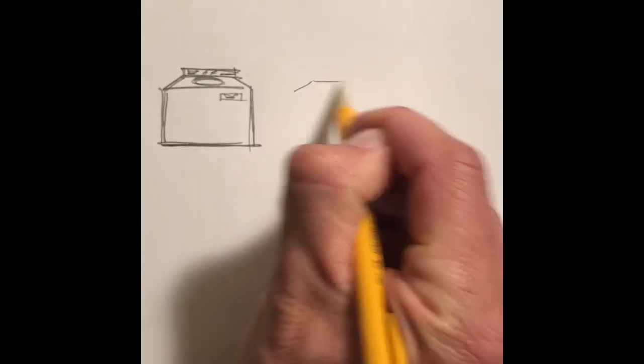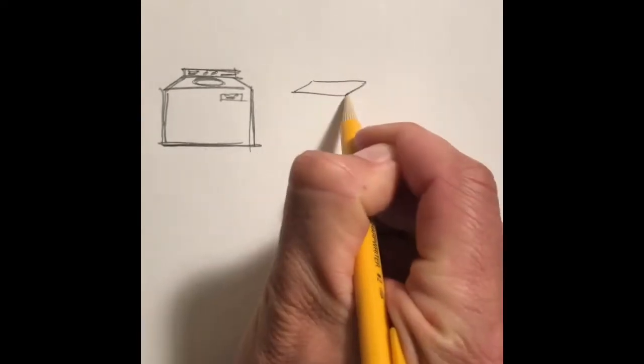Now let's say we want to take a washing machine, we want to do it in an angle. Alright, I'm just gonna start with a rhombus instead.